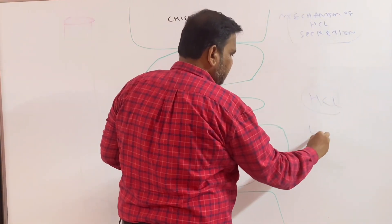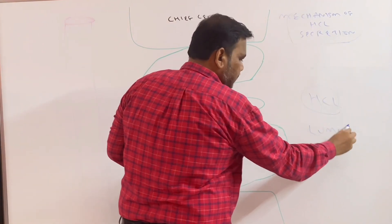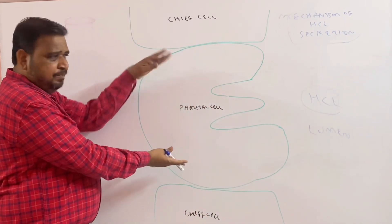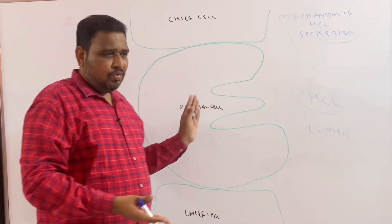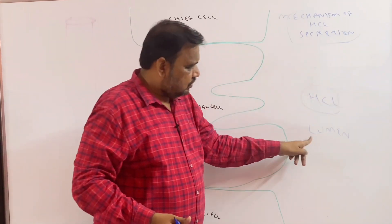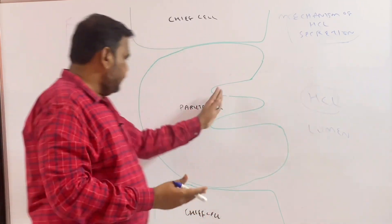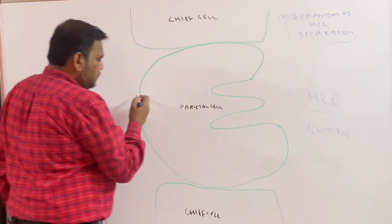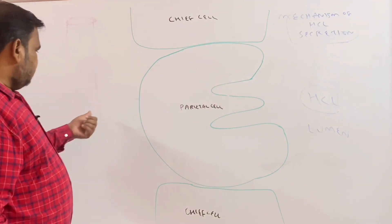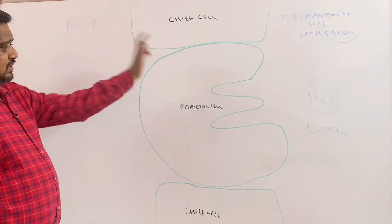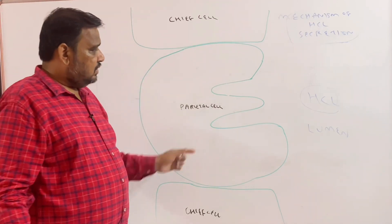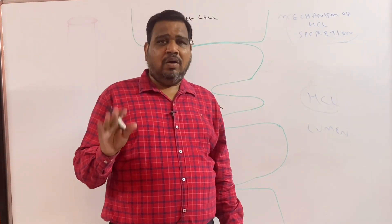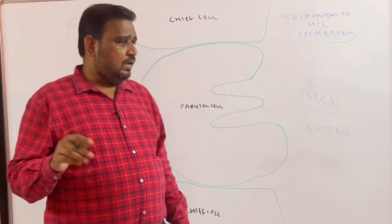This is the gastric lumen. Just concentrate on the diagram. This is the parietal cell which is going to secrete hydrochloric acid, HCl, into the gastric lumen — this is the GIT lumen. This is the apical border of the parietal cell. This we call the mesolateral, and you can see there is a blood vessel. This is the structure of the parietal cell. We are going to see how HCl is secreted from the parietal cell.